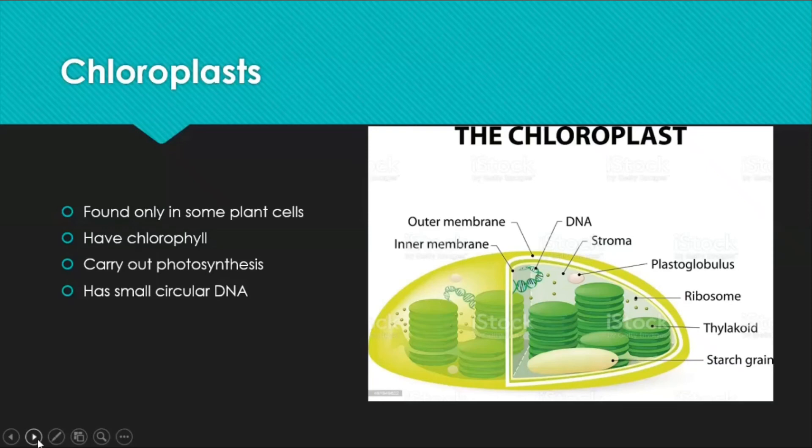Chloroplasts are found only in green parts of the plant — the green color itself comes from the chloroplast. They can be seen under a light microscope. These organelles have a pigment called chlorophyll that traps sunlight for photosynthesis — the process by which plants make their own food. The image of the chloroplast is a frequent exam question. Like mitochondria, chloroplasts also contain a small circular DNA.